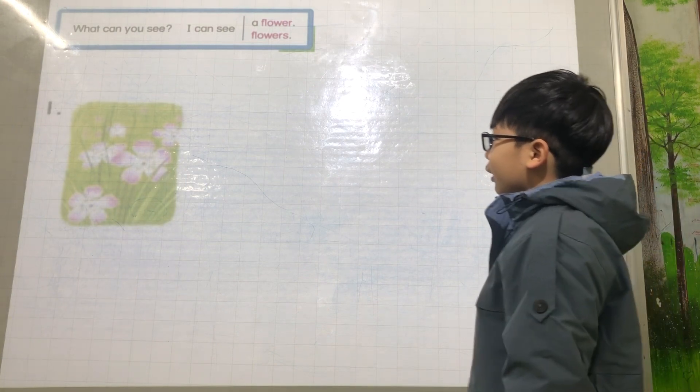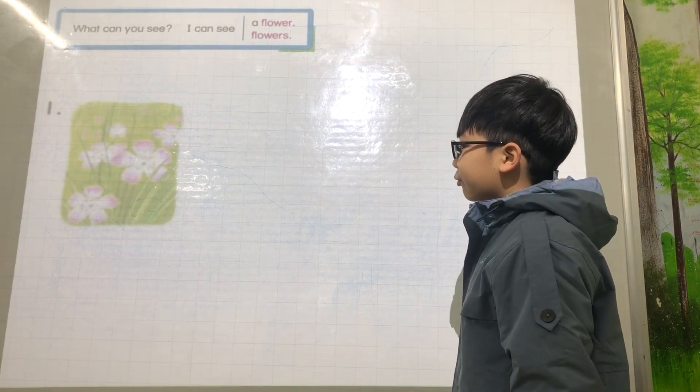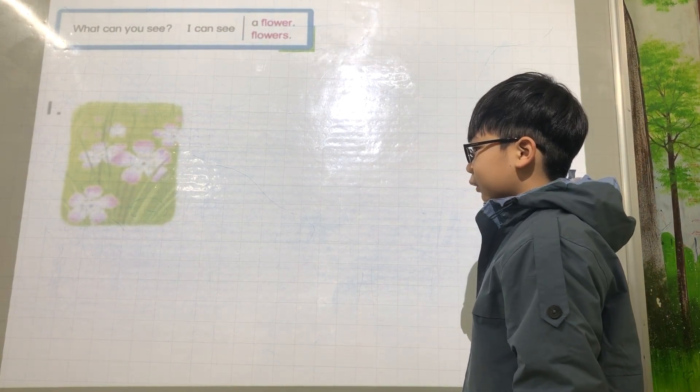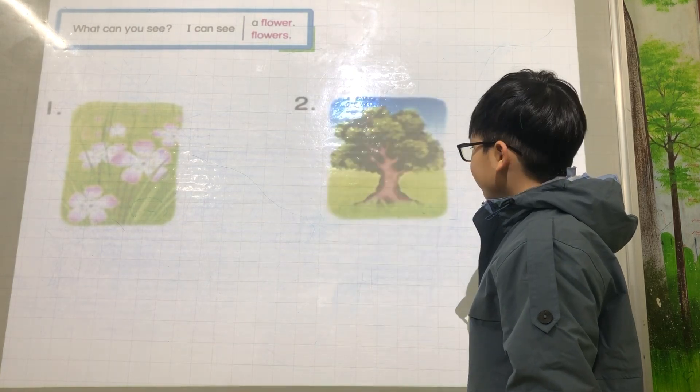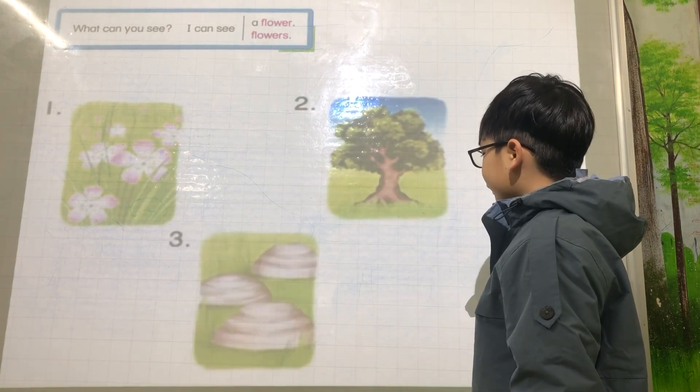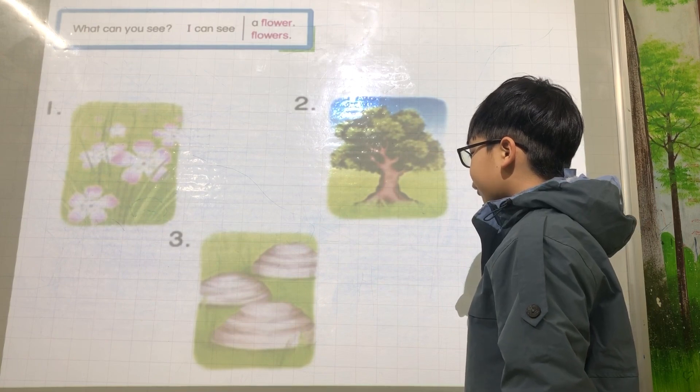What can you see? I can see flowers. Flowers. What can you see? I can see a tree. What can you see? I can see rocks.